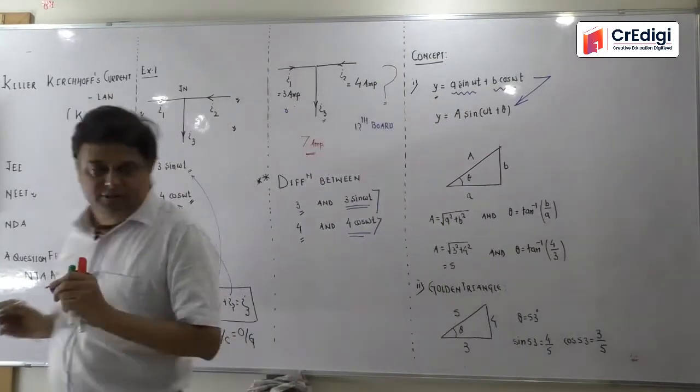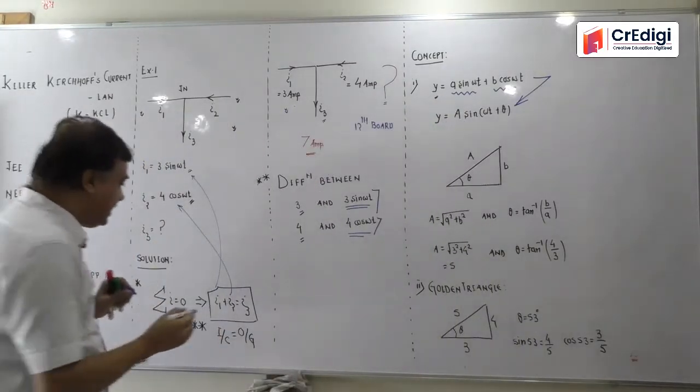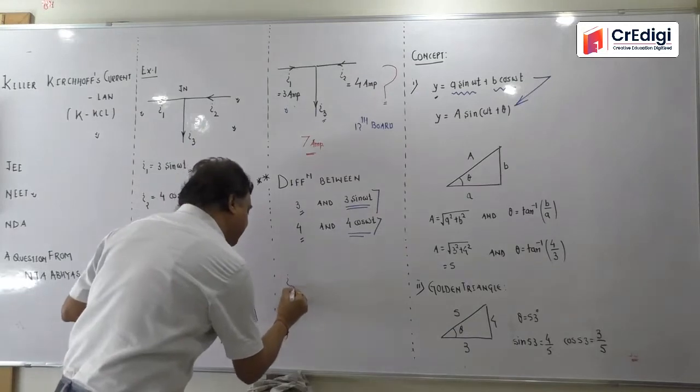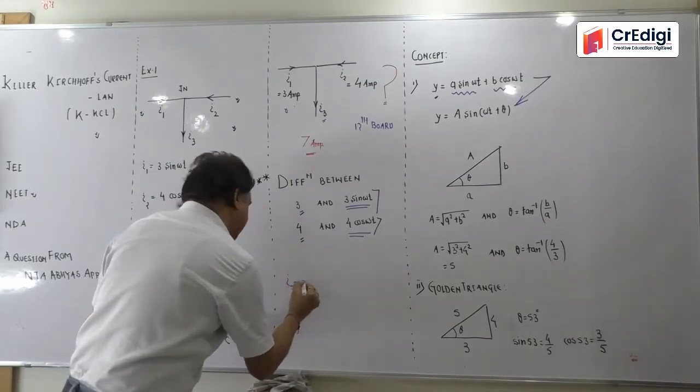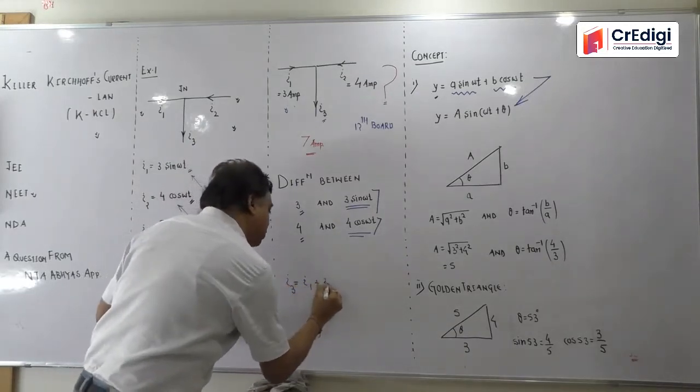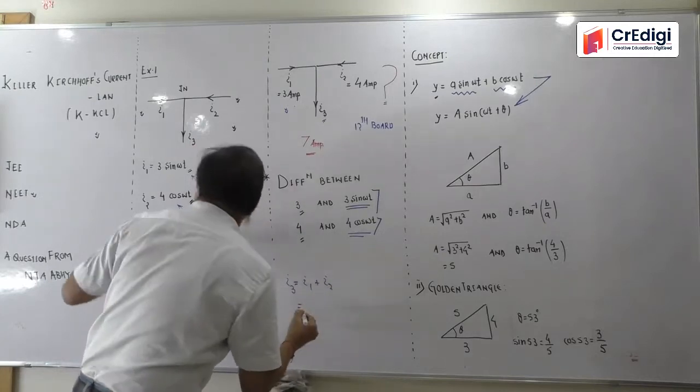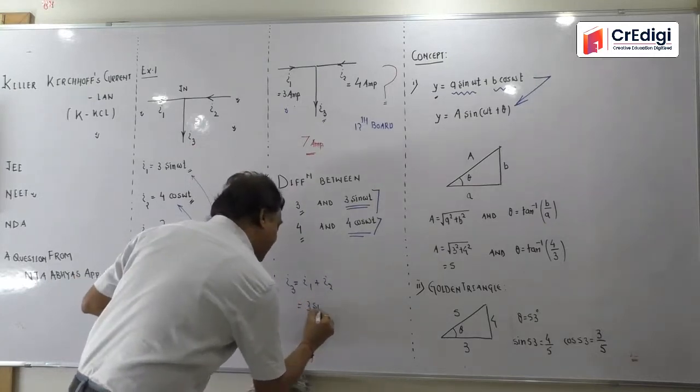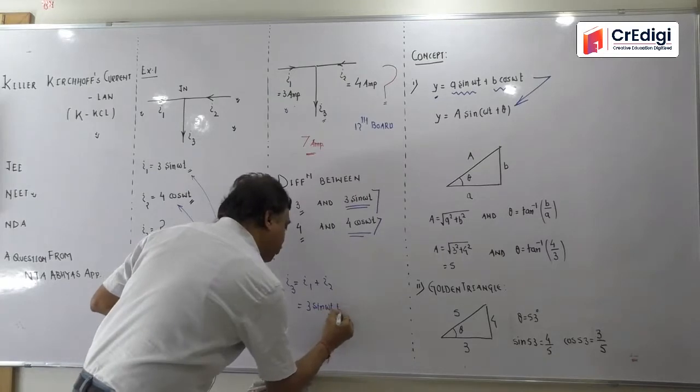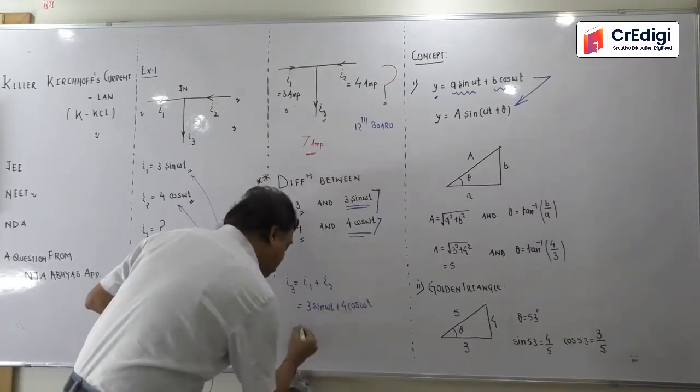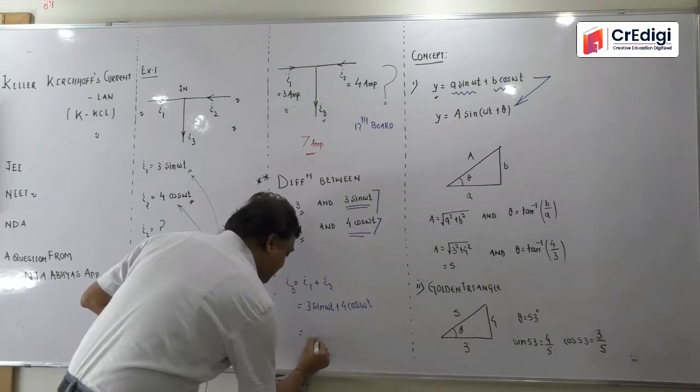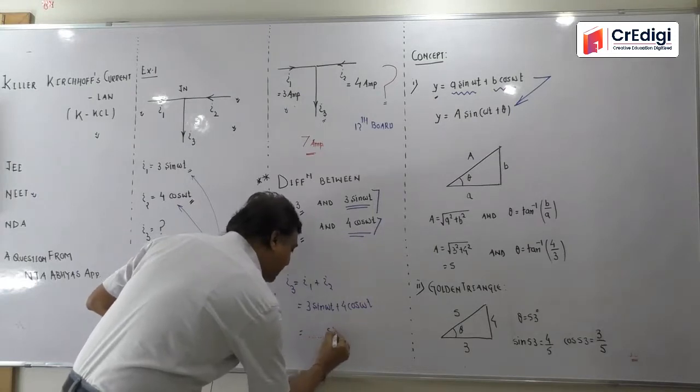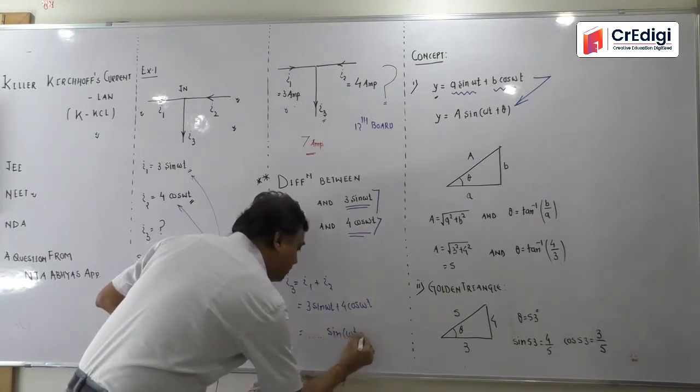Immediately write it. So I will write that I3 should be equals to I1 plus I2 and it should be equals to 3 sin omega t plus 4 cos omega t.